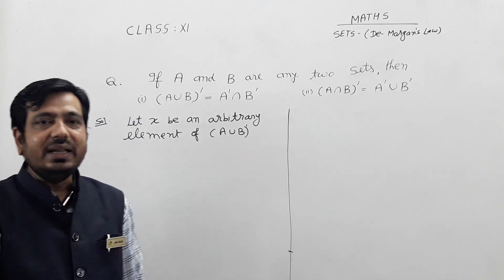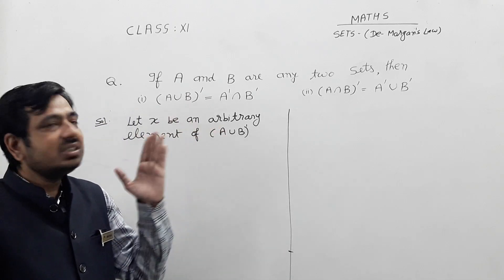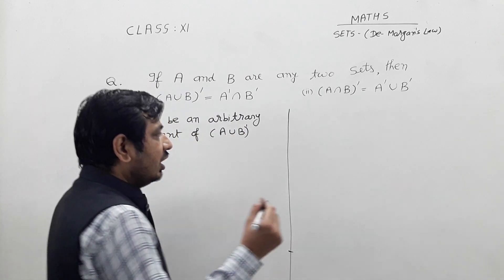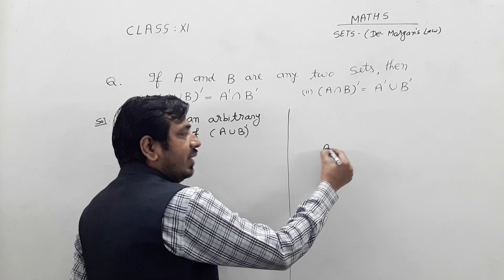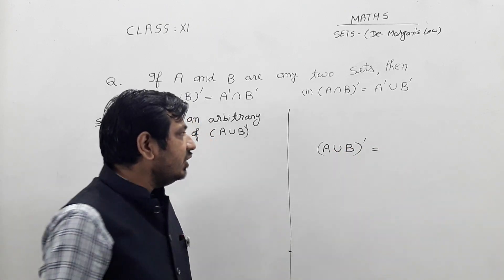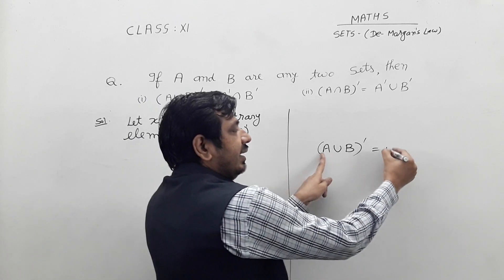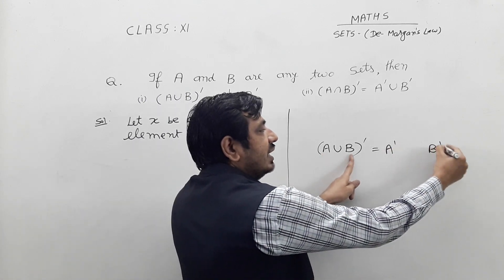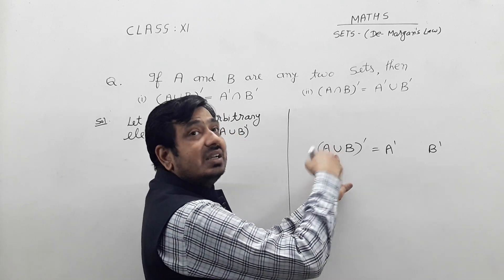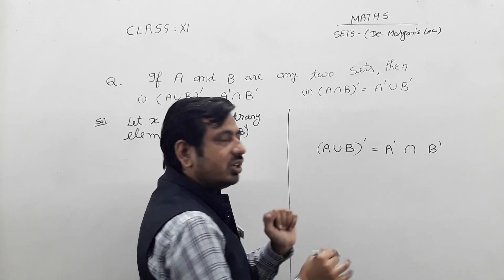Namaste classmates. In this video we prove De Morgan's law. What is De Morgan's law? For De Morgan's law, if you have A union B whole dash, and you want to separate A and B, it is A dash intersection B dash. When you separate A and B, the union on this side becomes intersection. This is the first De Morgan's law.